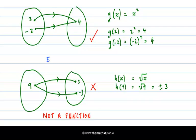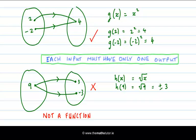So the really important point to note here is that each input must have only one output. So this up here is a function, because each input has only one output. Whereas down here, you see 9 is mapped down to two different numbers. So this is not a function.